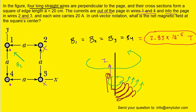Applying the right-hand rule to wire three — again pointing your thumb into the screen — your four fingers curl clockwise, projecting the magnetic field line in the direction basically pointing toward wire two. This is the magnetic field B3. By the same reasoning, the magnetic field produced by wire four points in the same direction as B2, and the magnetic field produced by wire one points in the same direction as B3.